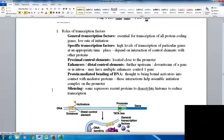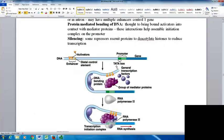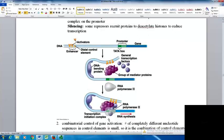One mechanism is protein-mediated bending of DNA, thought to bring bound activators into contact with mediator proteins. The piece of DNA folds, bringing these interactions together to help assemble the initiation complex on the promoter. Here's an example with enhancers, activators, and distal control elements folding to bring in mediator proteins and transcription factors, forming the transcription initiation complex.